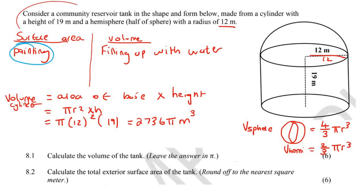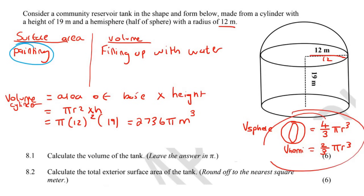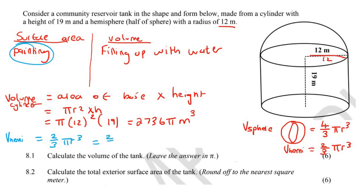In this particular exam, they did not give learners that formula, but in some exam questions they do sometimes give you the formulas. You do need to know them, though, because you might get to an exam paper where they don't give that to you. So for the volume of the hemisphere, we said it's going to be 2/3 π r cubed, so that's 2/3 π, and the radius is also 12, then cubed. Keep your answer with pi — that'll be 1152π meters cubed.